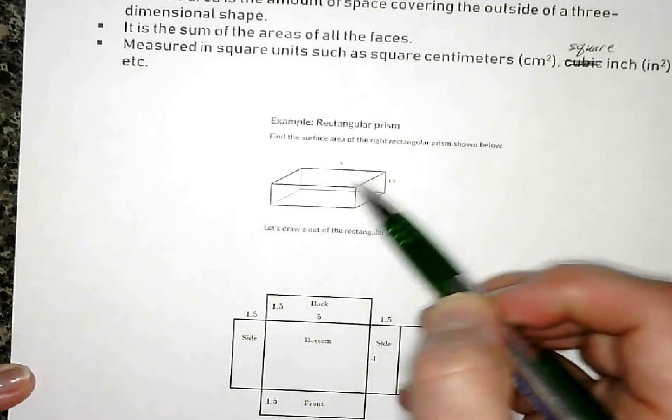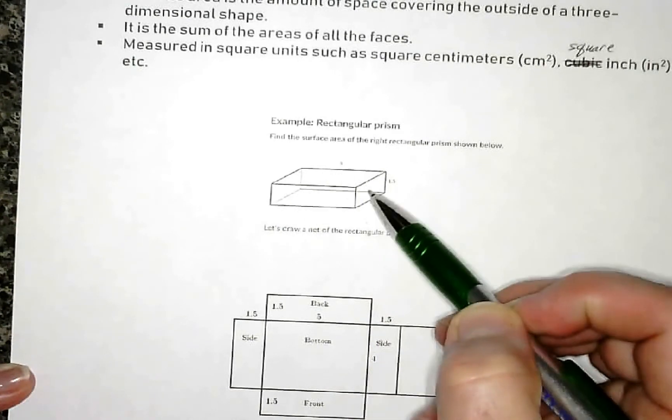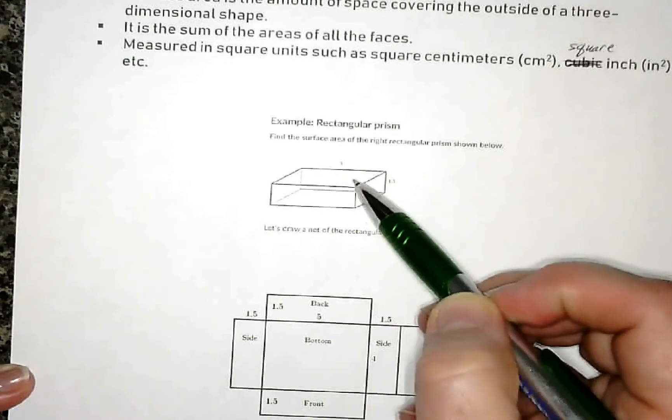The surface area is going to be the area, the separate areas of all six sides, which are all six rectangles.